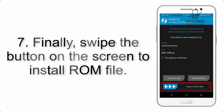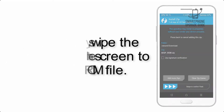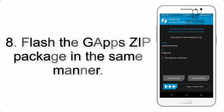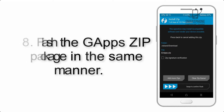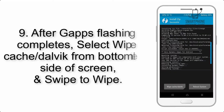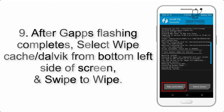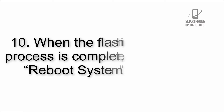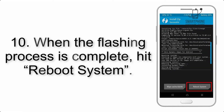Step 7: Swipe the button on the screen to install the ROM file. Step 8: Flash the GApps zip package in the same manner. Step 9: After GApps flashing completes, select Wipe Cache and Dalvik from the bottom left side of the screen and swipe to wipe.